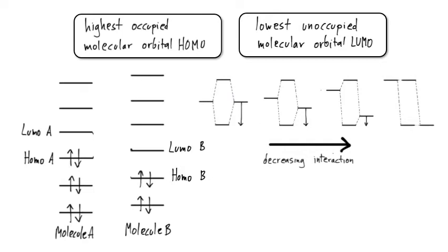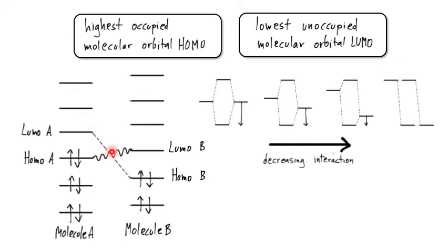Since empty and filled orbitals react with each other, for a reaction to take place it is usually between a LUMO and a HOMO — the LUMO is empty and the HOMO is filled. The most favorable interaction is for the HOMO-LUMO pair with the most similar energy. In the example of molecules A and B, it is the HOMO of A and the LUMO of B that are closest in energy and can interact to form a new molecular orbital, achieving the lowest energy outcome.